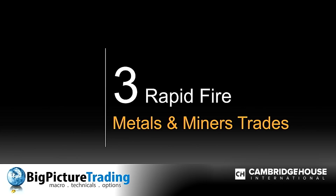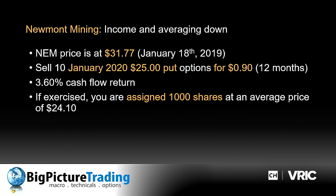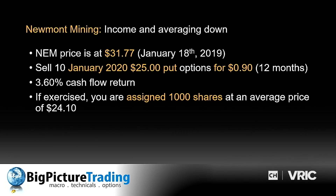With a few minutes left, here are three rapid-fire options trades. First: Newmont Mining just took over Goldcorp — going to be one of the largest gold miners in the world. The stock has corrected a bit. You can sell 10 January 2020 puts at the $25 strike for 90 cents, generating a 3.6% cash flow with an obligation to buy Newmont shares at $25, giving an average buy-in price of $24.10. If you own Newmont and want to lower your cost basis and generate income, selling the put as an income strategy and entering at favorable levels is a great approach.